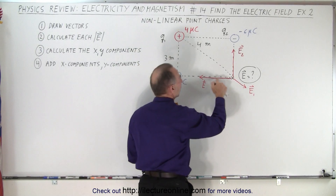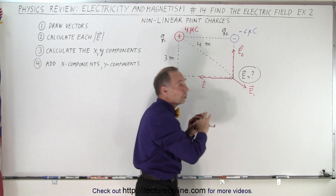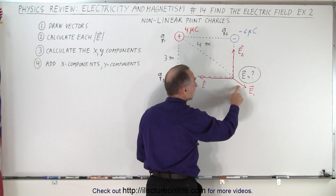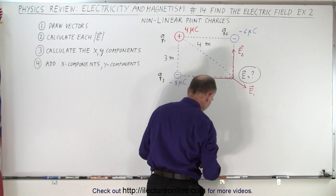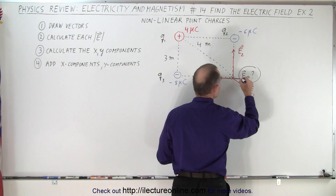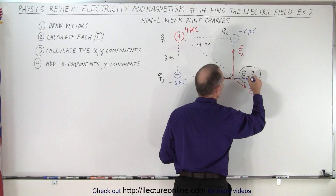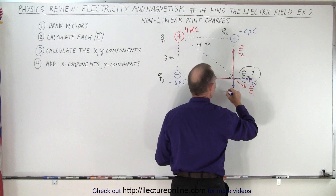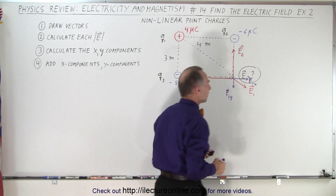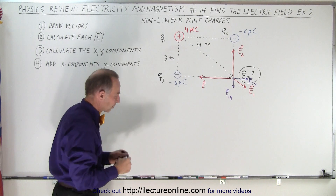Two of the three electric fields are either in the X or Y direction, so we don't have to find their components. But for E1, we'll have to find its two components — E1 in the X direction and E1 in the Y direction. We need to find the X and Y components of E1; otherwise, we cannot add the vectors.